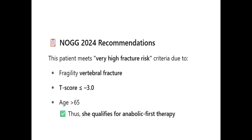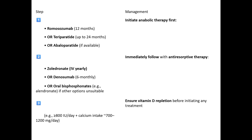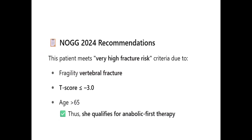Based on NOG recommendations, she is classified as requiring anabolic-first therapy — meaning she will benefit most from an osteoanabolic agent right at the beginning of therapy, even over bisphosphonates. Step one per NOG guidelines: initiate anabolic therapy first — either romosozumab for 12 months or teriparatide for up to 24 months. This should be immediately followed by anti-resorptive therapy such as zoledronic acid yearly, denosumab every six months, or oral bisphosphonates if other options are unsuitable. Adequate vitamin D of at least 800 units per day and calcium intake of 700 to 1200 mg per day must be ensured before initiating any treatment.